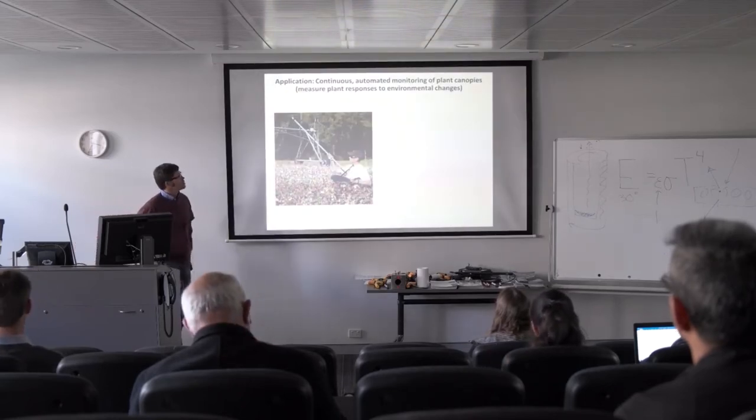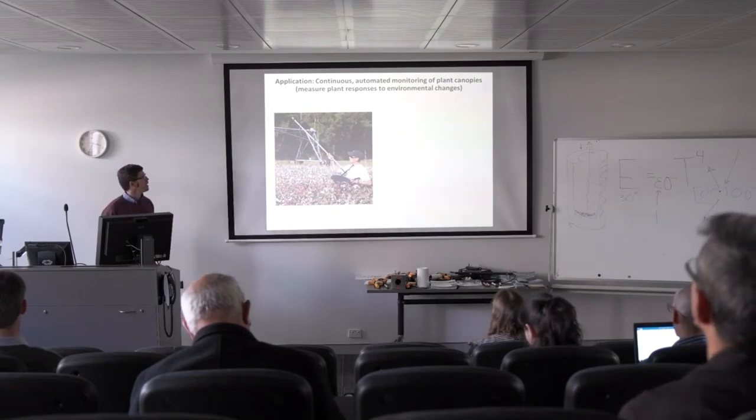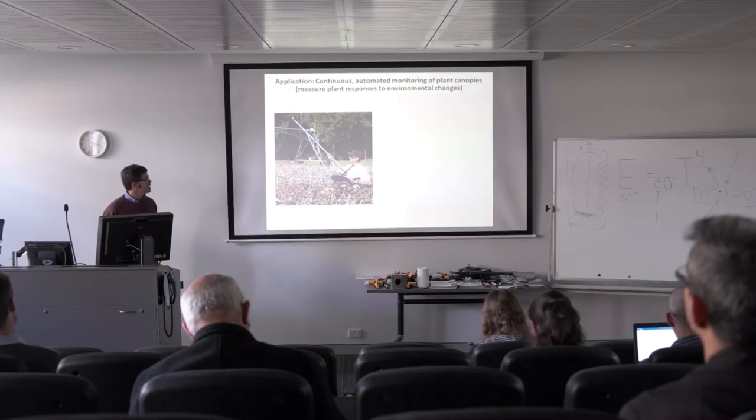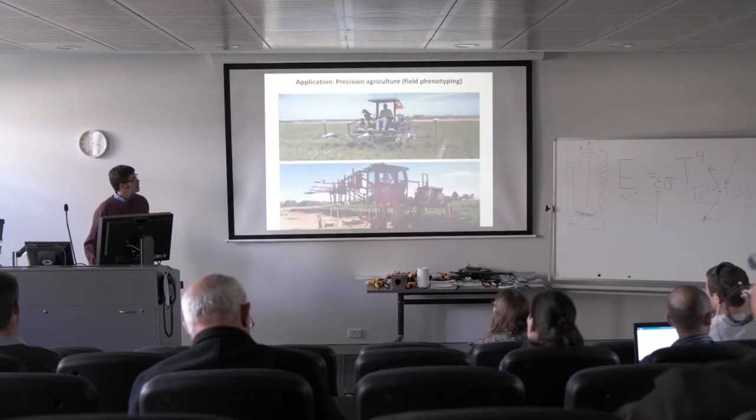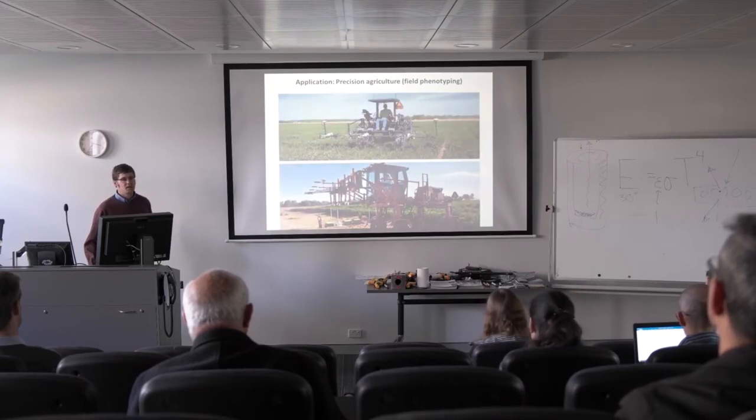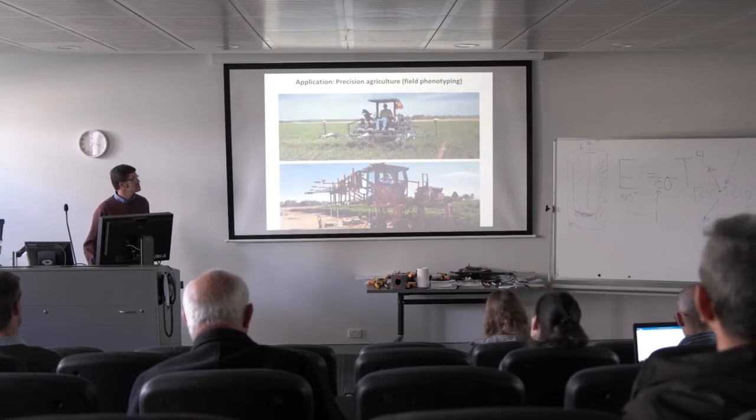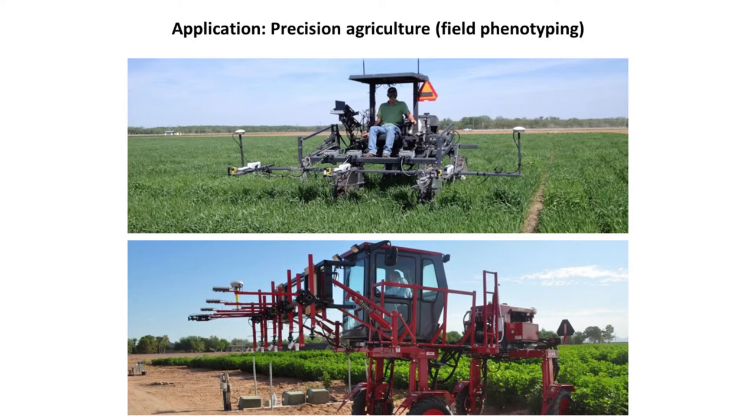Some applications—and I won't go into a ton of detail here, but this is the kind of thing you could do with a unit like this: continuous automated measurement of plant canopies. Often we're interested in plant response to environmental change, and this might be one way to quantify that, measuring reflectance spectra. Another potential application is precision agriculture, rapid field phenotyping of crop plants, looking for differences in genetic lines, differences in different treatments. We can mount them on mobile instruments and collect high-frequency data for precision ag.